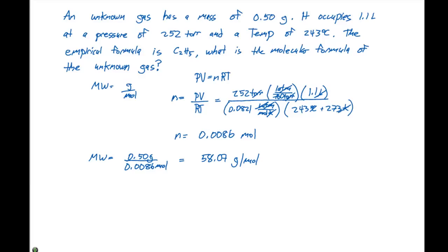If we look at this gas, we're told it has an empirical formula of C2H5. To determine our empirical formula weight, it's 2 times 12 plus 5 times 1.00. This gives us an empirical formula weight of 29 grams per mole.